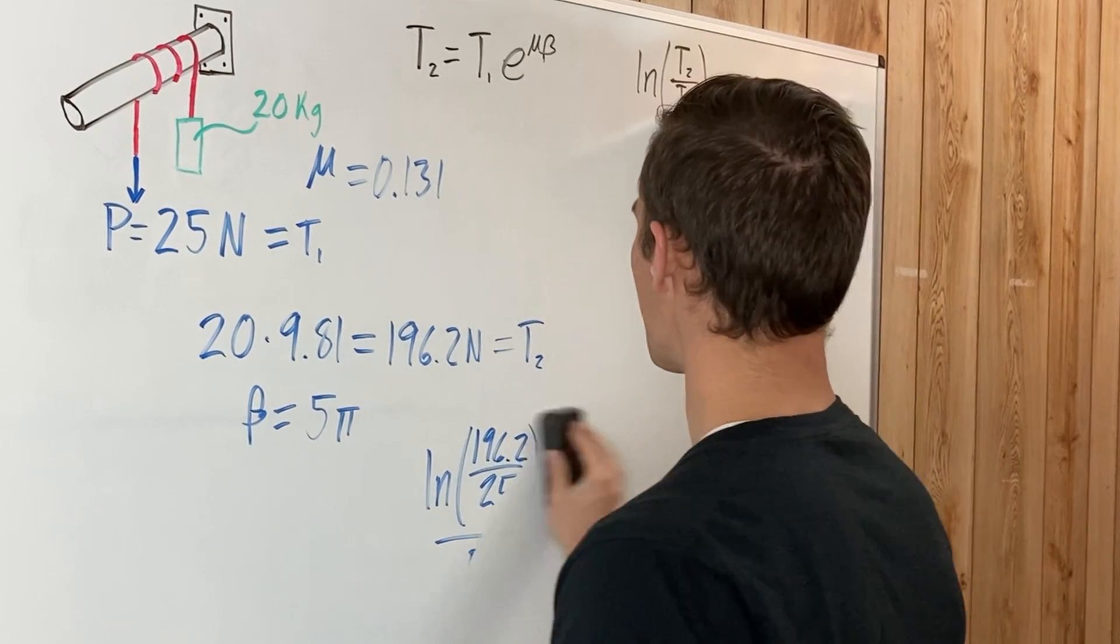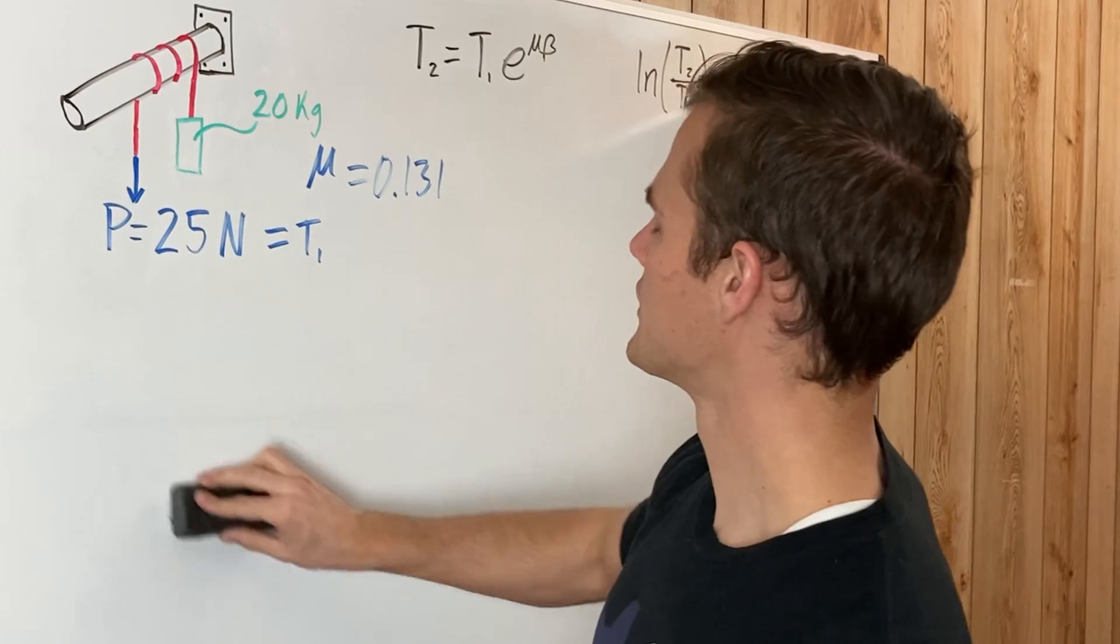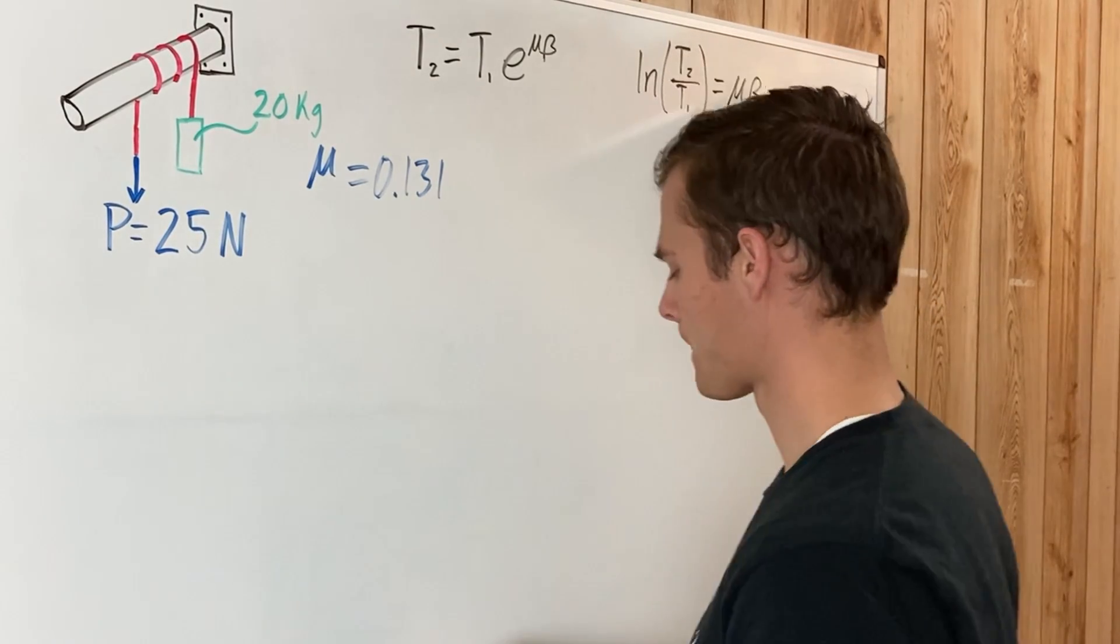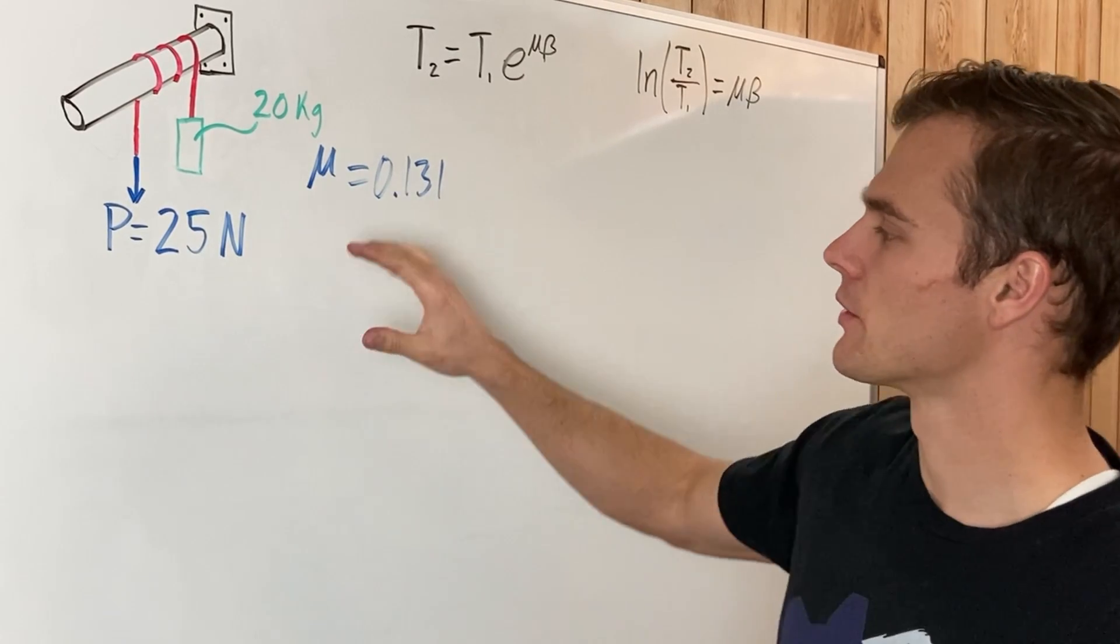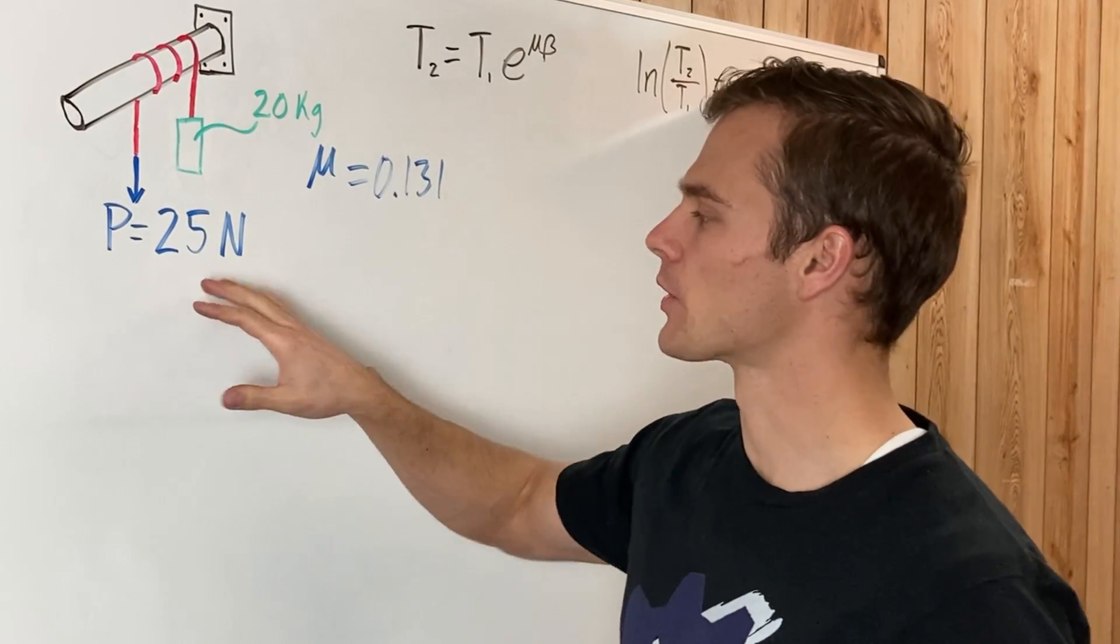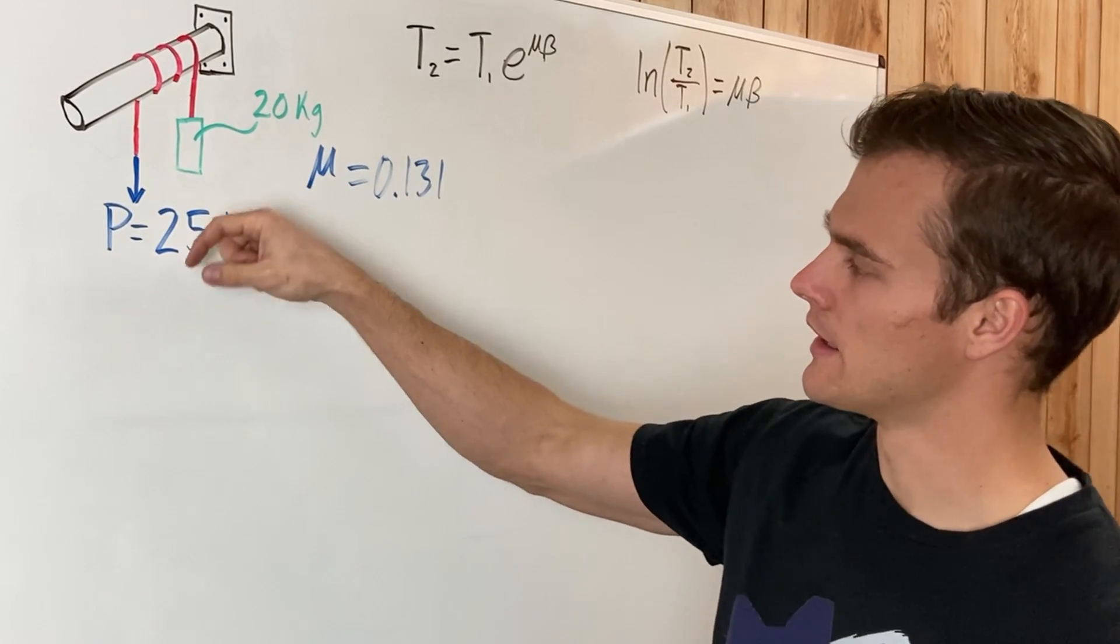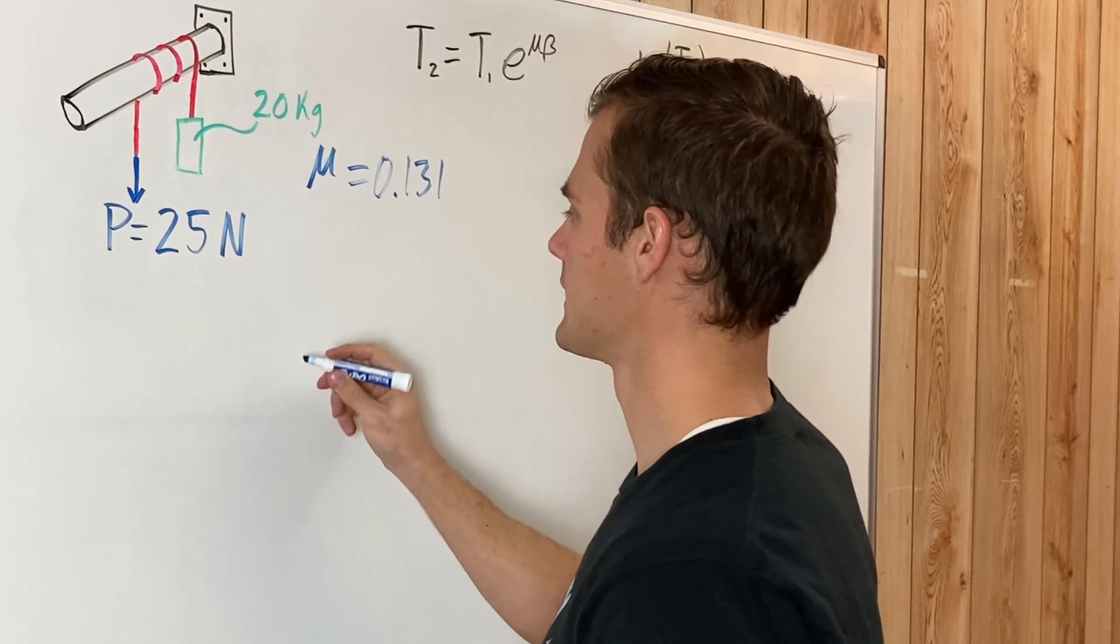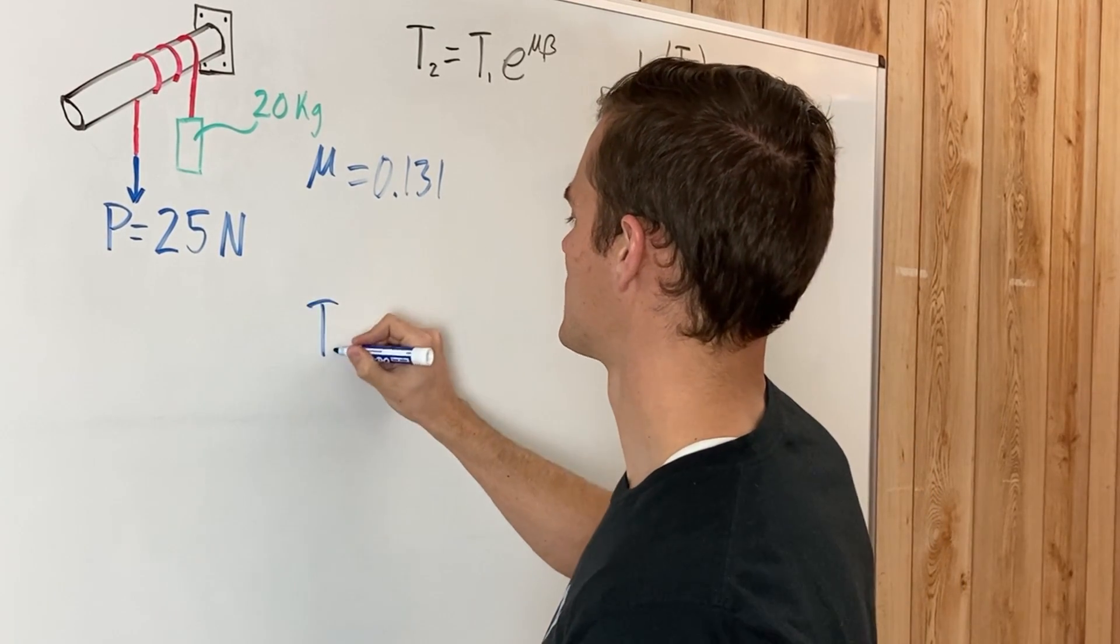So now that we've found that, we can readjust so that this force P is no longer going to be T1, but rather T2. It is going to be the minimum force needed to start pulling this weight up. So direction of impending motion will be that P is downwards. And that means P, in this case, is T2. And that's what we need to solve for. So T2, which equals P, and it's no longer going to be 25 newtons.